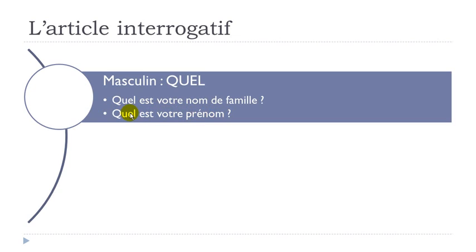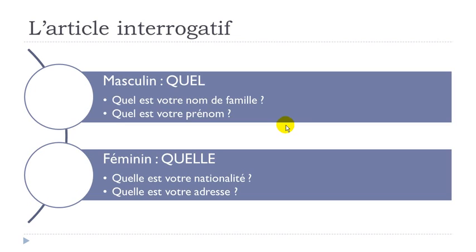You can see that NOM and PRÉNOM are masculine words, and that's the reason why in that case you choose the article according to the gender of the word it is connected to. QUEL is the masculine form because NOM is masculine, and QUEL is the masculine form because PRÉNOM is also masculine.